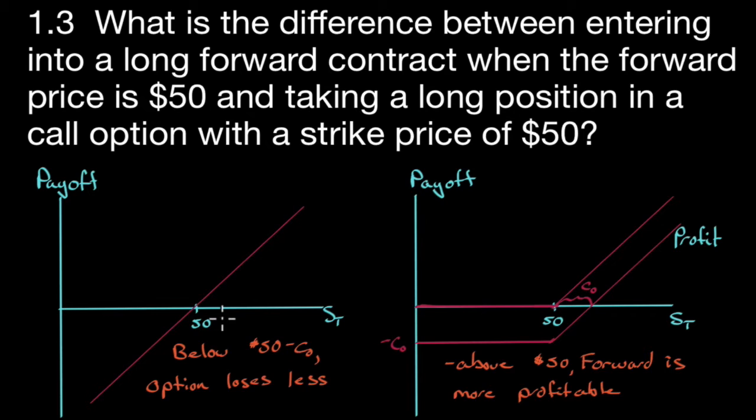So if the price of the asset were under $50, the buyer of the call option wouldn't exercise. The payoff would be zero, and that would be the same for the seller. The payoff would be zero.